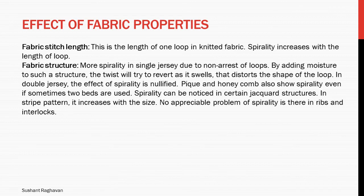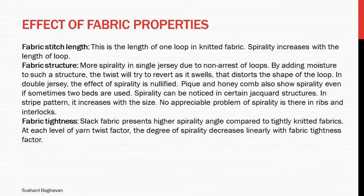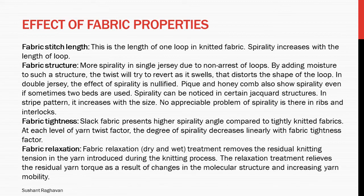Spirality can be noticed in certain jacquard structures, and in stripe patterns it increases with the size. No appreciable problem of spirality is found in ribs and interlocks. Slack fabric presents a higher spirality angle compared to tightly knitted fabrics; at each level of yarn twist factor, the degree of spirality decreases linearly with the fabric tightness factor. Fabric relaxation through dry and wet treatment removes the residual knitting tension introduced during knitting, relieving residual yarn torque due to changes in molecular structure and increasing yarn mobility.